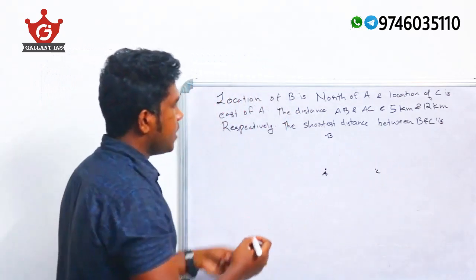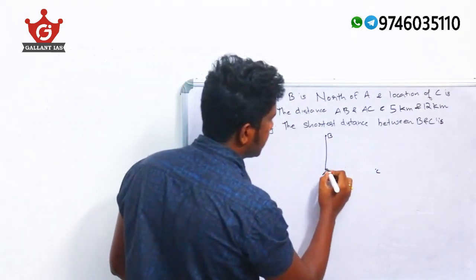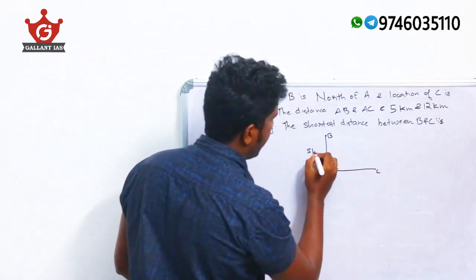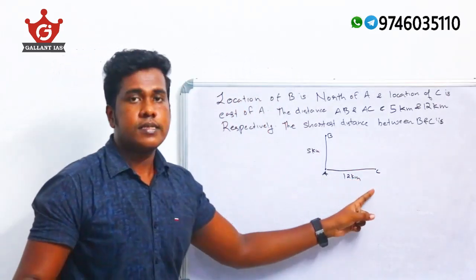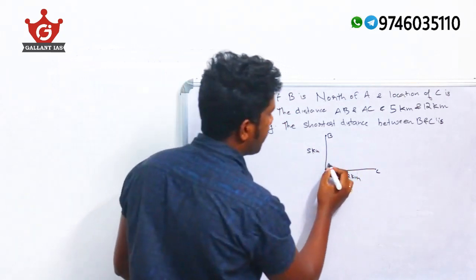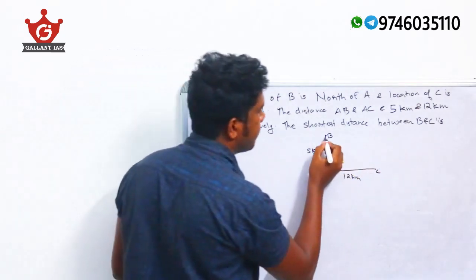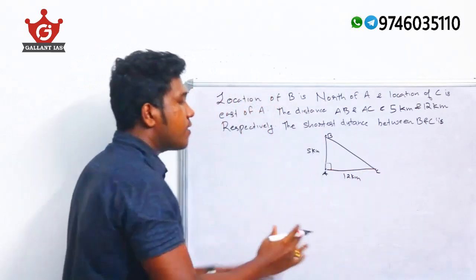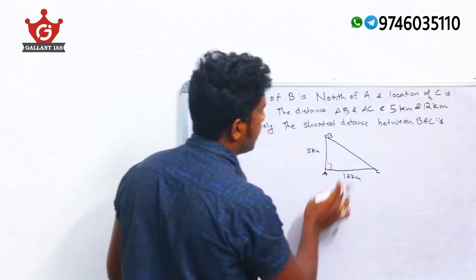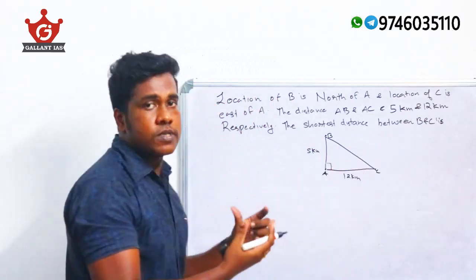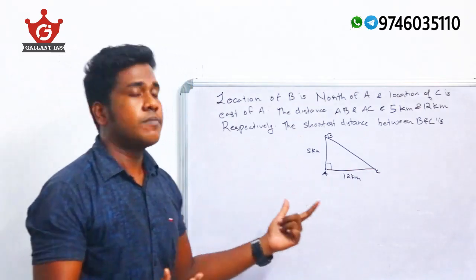Since B is north of A and C is east of A, the lines AB and AC are perpendicular to each other, forming a right angle at A. BC is the hypotenuse of the right-angle triangle. We can solve this using the Pythagoras theorem.